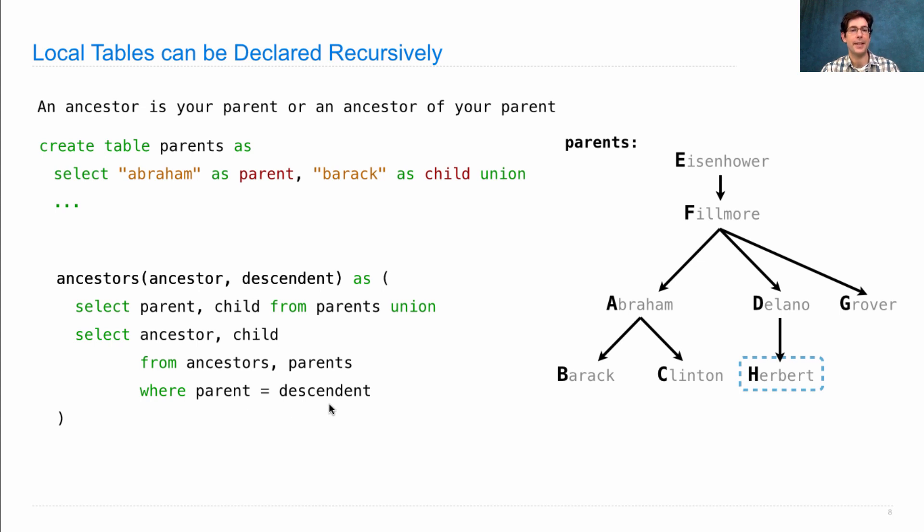So that says your ancestor is the ancestor of your parent. Putting this inside of a with clause in a select statement that asks for all the ancestors of the descendant Herbert will give us Delano, Fillmore, and Eisenhower.